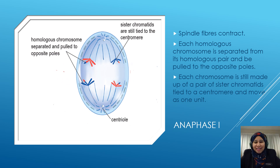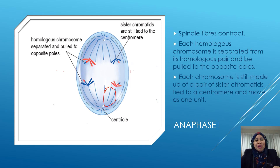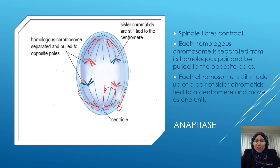The next stage is anaphase 1. During anaphase 1, the spindle fiber becomes shorter because it contracts. When the spindle fiber contracts, it pulls each homologous chromosome to the opposite pole. Each chromosome is still made up of a pair of sister chromatids tied to a centromere and moves as one unit.